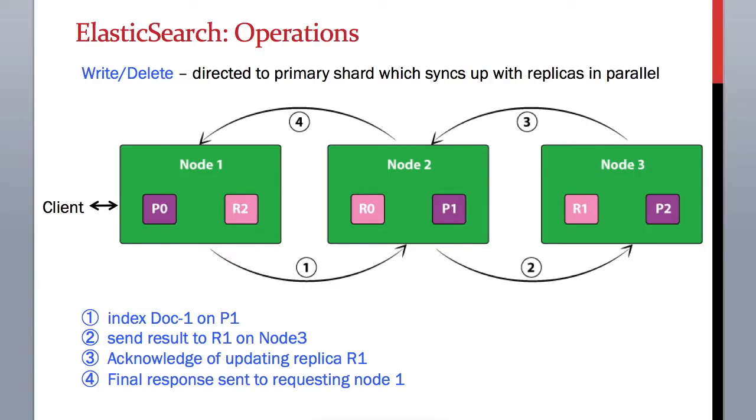Imagine we have a cluster of three nodes. Each of the nodes has a few shards stored in it. Now let's say a client has sent the document with ID document 1 to node 1. Since node 1 received this request from the client, it will be the originating node in this case.